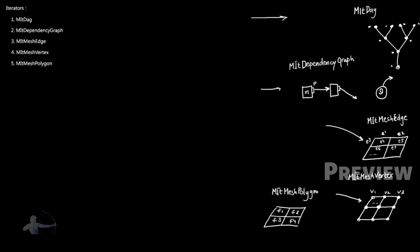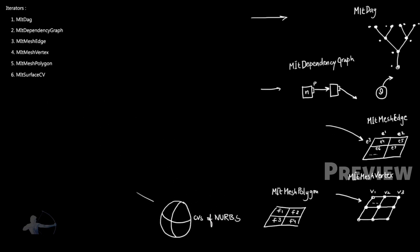The sixth type of iterator is MItSurfaceCV, and this iterator works on the NURBS surface. It works on the CVs of NURBS surfaces and their groups. These are some of the basic iterators provided with OpenMaya. There are a number of additional iterators available as well.